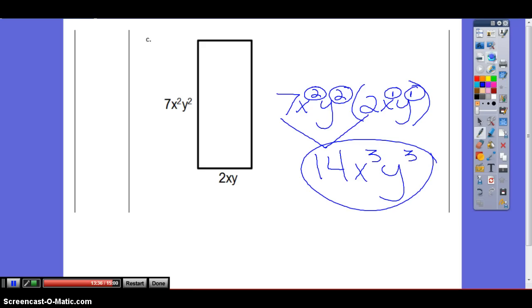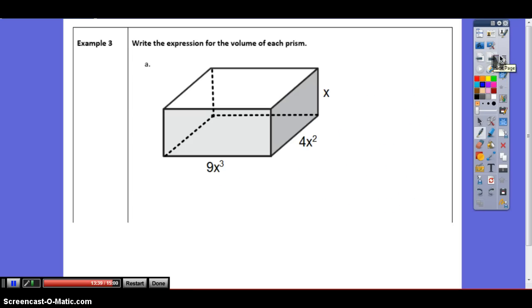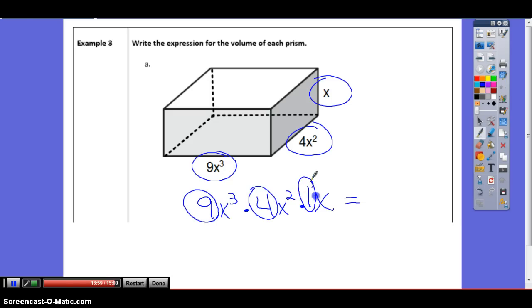Now we go to volume. It's the same thing except for it's length times width times height. So you get to do three of them. All three of these multiplied by each other. 9x cubed times 4x squared times x. What does that equal? What's 9 times 4 times 1? 36, positive. Now how many x's do I have? 6. Because I have 3 and I have 2 and I have 1. Add those all together to the 6th power.